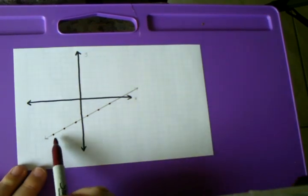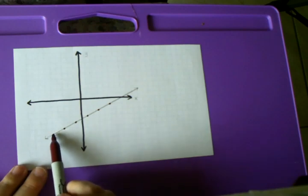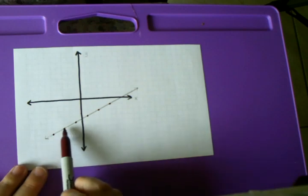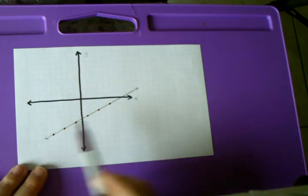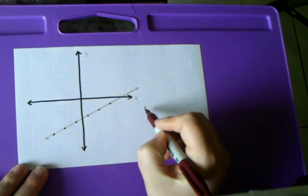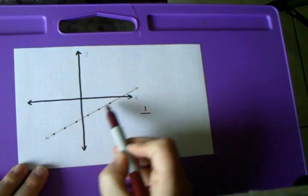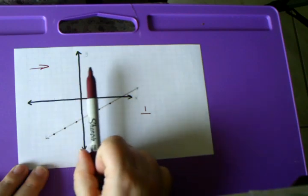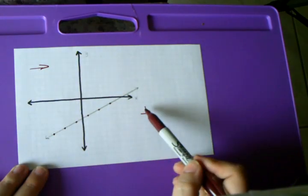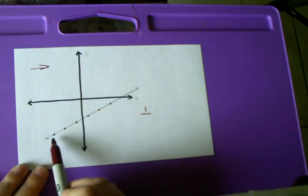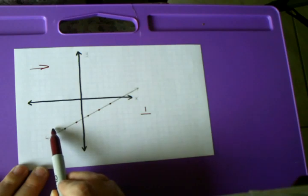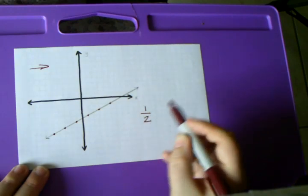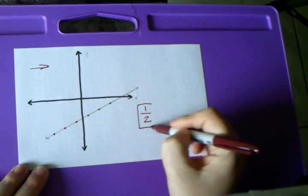I always start at the left. Here is my point on the left. How many lines do I have to go up to be even with the next point? I go up one line. So my rise is one, and because the line is going up as I move from left to right, that's positive. Then I count how many lines I go over until I run into the next point: one, two. So my slope here is one over two.